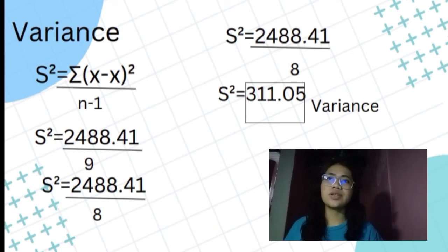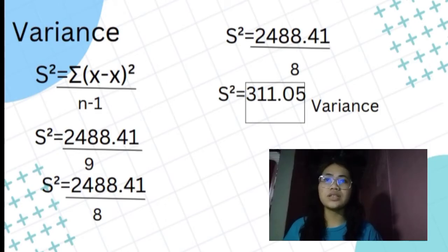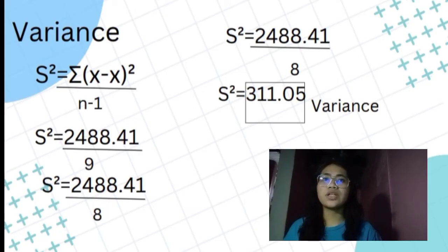For variance, we use the formula: s-squared equals the summation of x minus x-bar raised to 2, over n minus 1. Substituting: s-squared equals 2,488.41 over 9 minus 1, which is 8. So 2,488.41 divided by 8 equals 311.05. Our variance is 311.05.